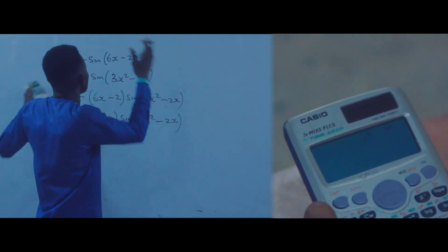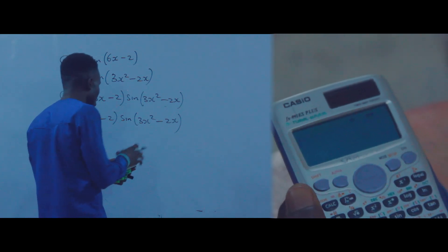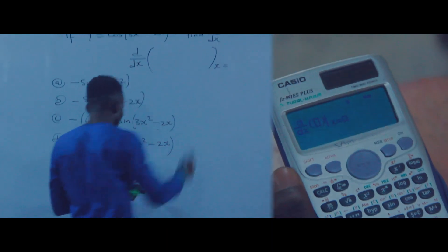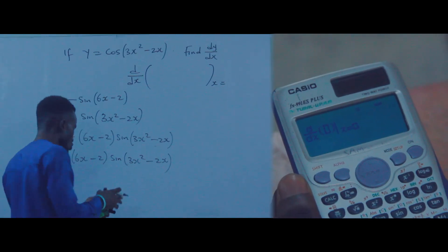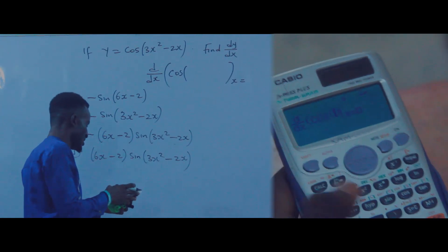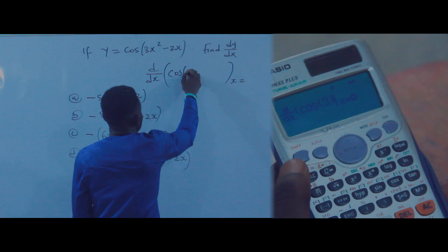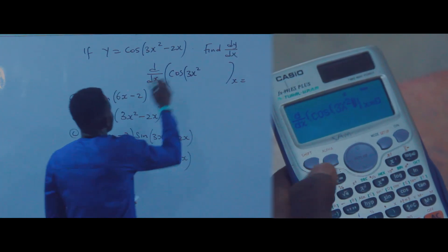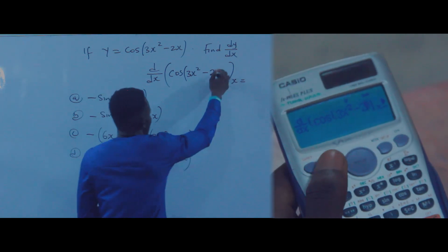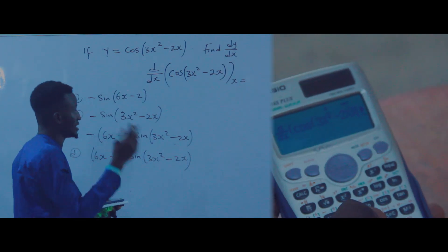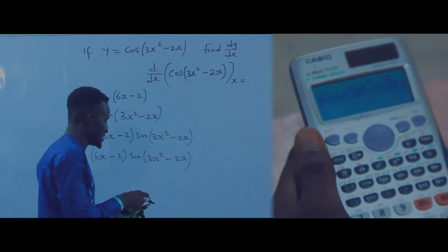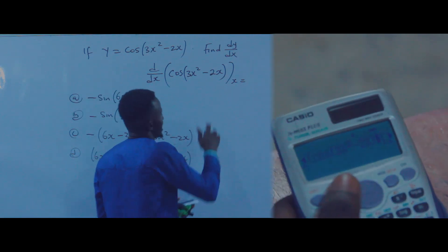Press Shift and the button under Alpha to open the differentiation function. Then press cos — it will open the bracket. Press 3, then Alpha X, then square, then minus, then 2, then Alpha X. Close that bracket, because the outer bracket belongs to the differentiation function. That is all for entering the question expression.